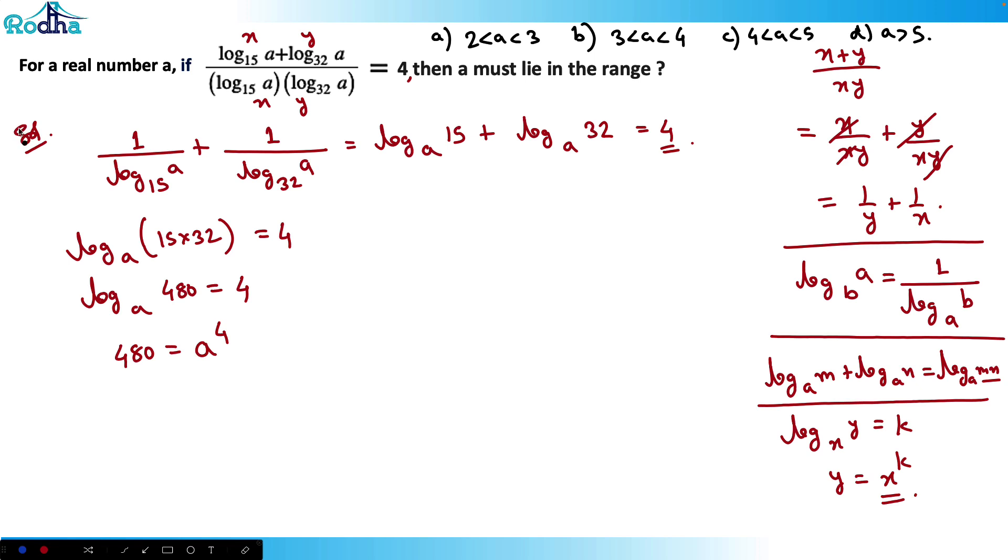Now I need to observe here that if a^4 equals 480, where does this a lie? Obviously if you observe, I know the fourth power here. I know that 3^4 = 81, 4^4 = 256, and 5^4 = 625.